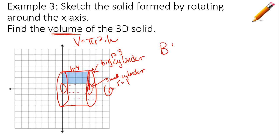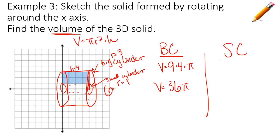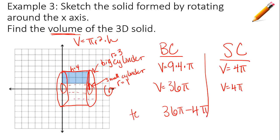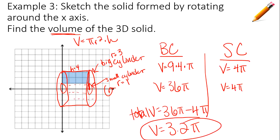For the big cylinder: volume equals pi times 3 squared times 4, which is 36 pi. For the small cylinder: volume equals pi times 1 squared times 4, which is 4 pi. The total volume is 36 pi minus 4 pi, which equals 32 pi. The hardest part of these examples is envisioning what the revolution looks like around the x-axis or y-axis.